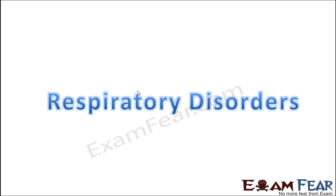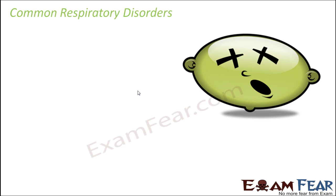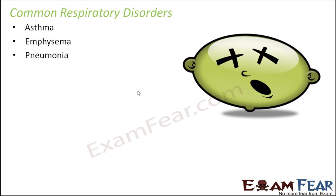Let us talk about the last topic of this lesson: respiratory disorders. Since we saw how important the respiratory system is, how important breathing is, and how important oxygen is to get energy inside our body — there are many disorders associated with this respiratory system. Since there are many organs involved, something wrong with any of these organs can cause serious problems. Some common respiratory disorders are asthma, emphysema, pneumonia, and occupational respiratory disorders.